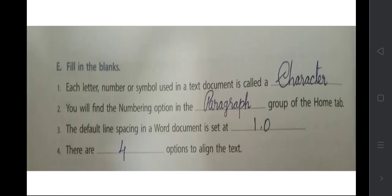Fill in the blanks: Each letter, number, or symbol used in a text document is called a character, not font. You will find the numbering option in the Paragraph group of the Home tab. The default line spacing in a Word document is set at 1.0 — this is the line spacing number giving a gap between two lines.